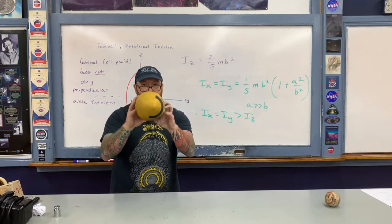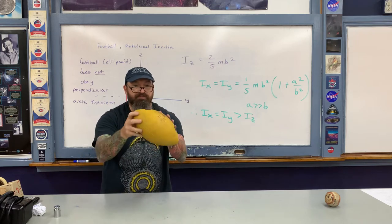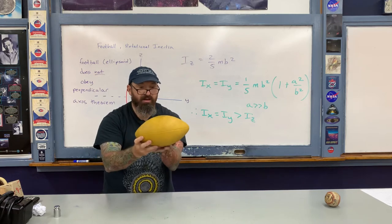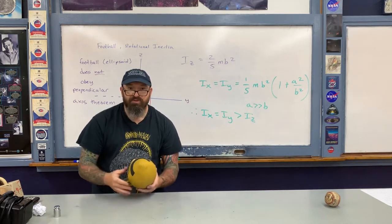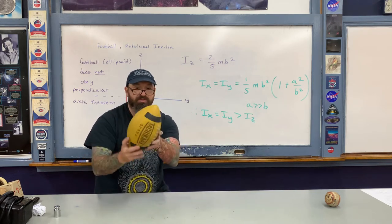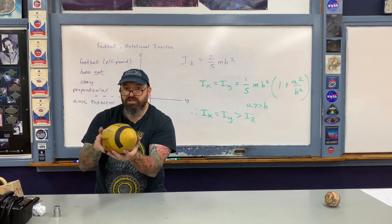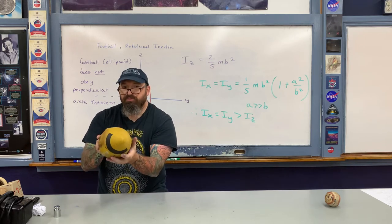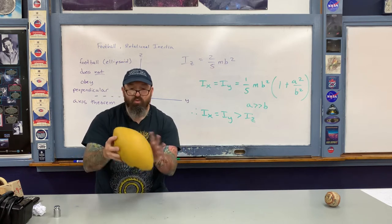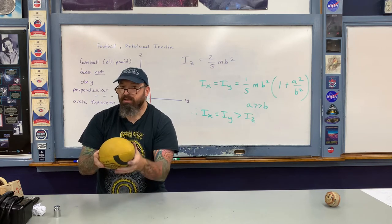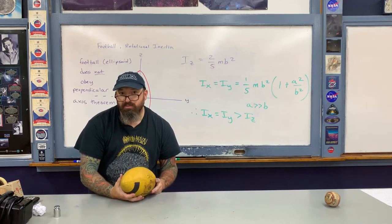If you spiral the football, the cross-sectional area passing through the air is smaller than if it rotates end-over-end, as in a field goal or kickoff. When it rotates like that, there's a bigger cross-sectional area subjected to air resistance — the drag coefficient is much larger. So even though spiraling gives a smaller rotational inertia Iz, the football travels through the air much more easily because the force of air resistance is much less. That's why a quarterback always wants to spiral the football.